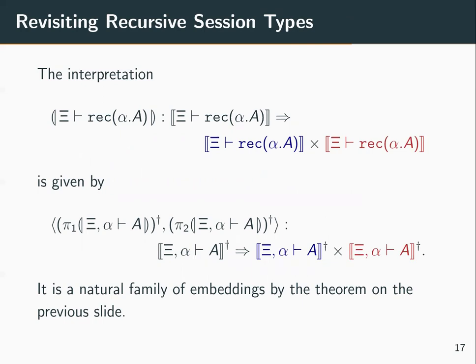Circling back to interpreting recursive session types: the category into which we interpret session types has all the structure we need for the dagger operator. We use the dagger operator and properties of products to define the interpretation. Not only is the interpretation a mediating morphism of products, but it is also a mediating morphism out of an initial algebra, which gives us that it is a natural family of embeddings — exactly what we wanted. We can also use the parameter identity to show it respects the substitution property.